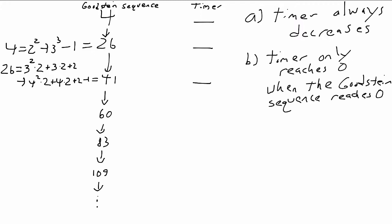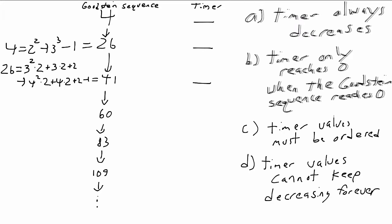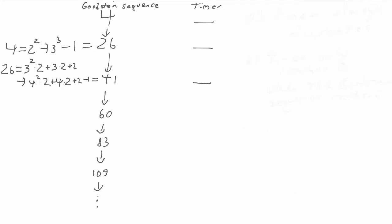The value of our timer can't be a natural number. It has to be some kind of value which still has an ordering, and which still has the property that it can't keep getting smaller forever — if the value decreases at each step, the timer has to eventually run out. Instead, we're going to use the ordinal numbers, which are an extension of the natural numbers to include transfinite, that is, infinite, numbers. The ordinals are exactly the approach to infinite numbers which captures this idea that numbers count down.